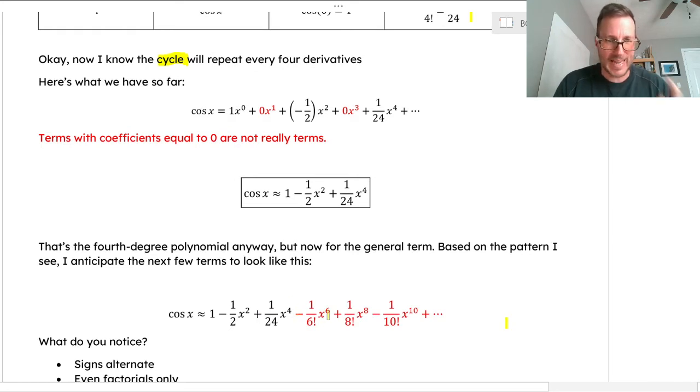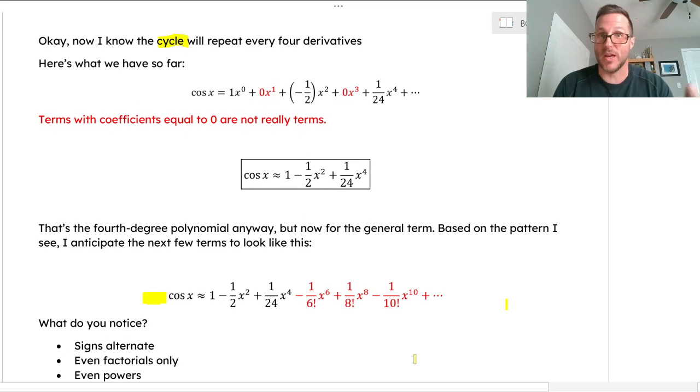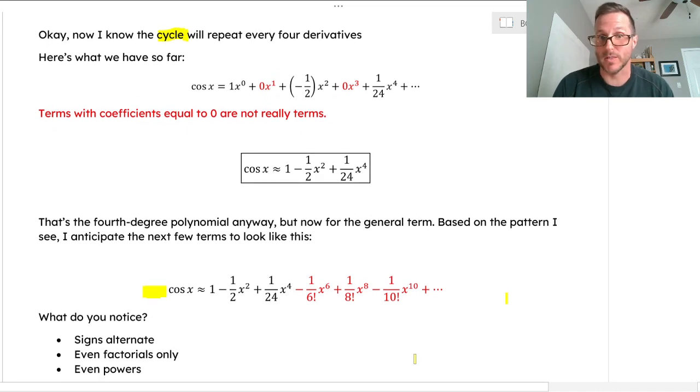Let's see if we can just extend this a little bit further. I've extended the cosine polynomial to include negative one over six factorial x to the sixth, positive one over eight factorial x to the eighth, negative one over ten factorial x to the tenth, and so on. It will follow that pattern forever because of the cyclic nature of those derivatives. What do you notice? If we're trying to get a general pattern here for what cosine looks like, what would the infinity terms look like?